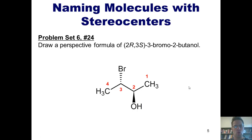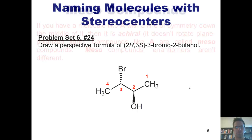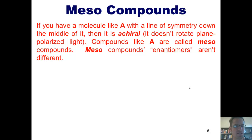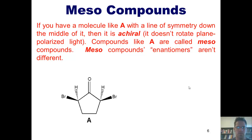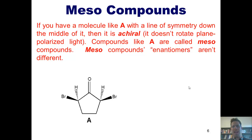So this molecule is 2R,3S-3-bromo-2-butanol. Please take the time to reevaluate it and make sure that is correct. I now want to introduce you to the concept of meso compounds. If you have a molecule like A that happens to have a line of symmetry going down the middle of it, then it is achiral, which means that it doesn't rotate plane-polarized light. Compounds like A are called meso compounds.